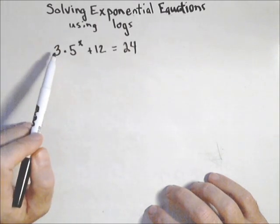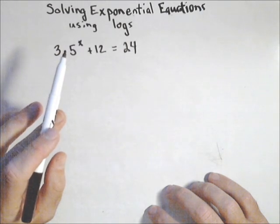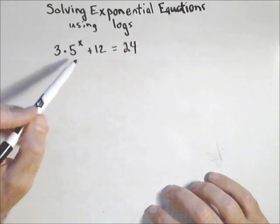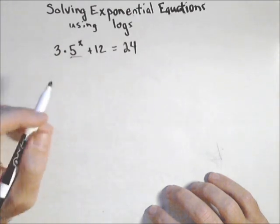For instance, we have three times five to the x plus 12. So here the phrase, isolate the exponential piece. So we want to do that first. We want to isolate the five to the x first before we bother taking logs. So there's too much else going on.